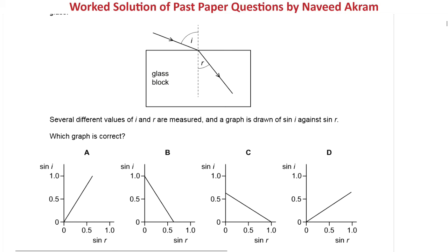This is a refraction problem. We know that according to Snell's law, the equation sine i over sine r is a constant. When sine i over sine r is a constant, it means that sine i is proportional to sine r. This is more evident if we write it as sine i equals constant times sine r. It means the graph between sine i and sine r must be a straight line passing through the origin.